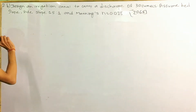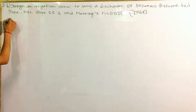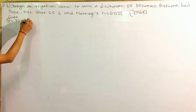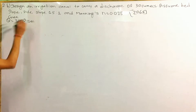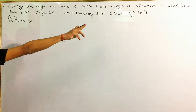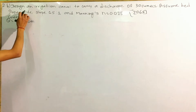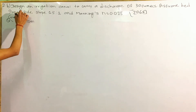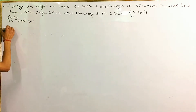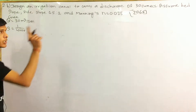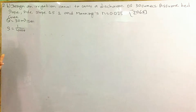I will give you a discharge of 30 cubic meters per second. This is the assumed bed slope. I will give you a bed slope of 1 into 4,000.